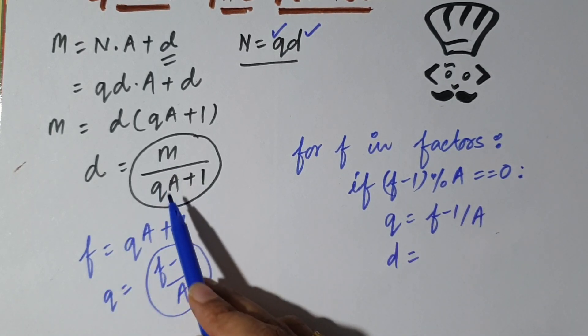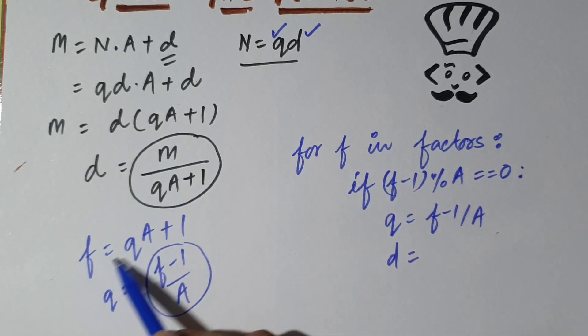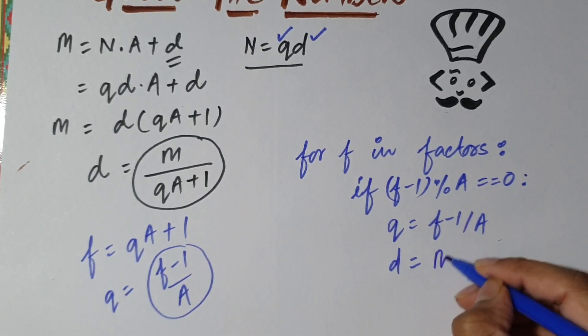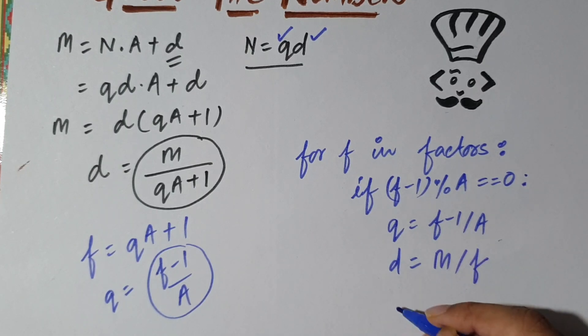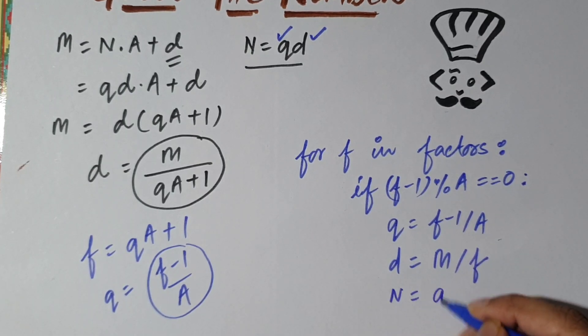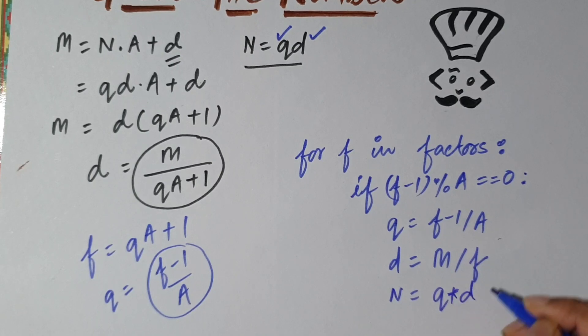And what is d? d is M divided by (QA plus 1). Now what is QA plus 1? QA plus 1 is actually F. So we have M by F. And what is N? N is equal to Q into d. That's it. We have N.